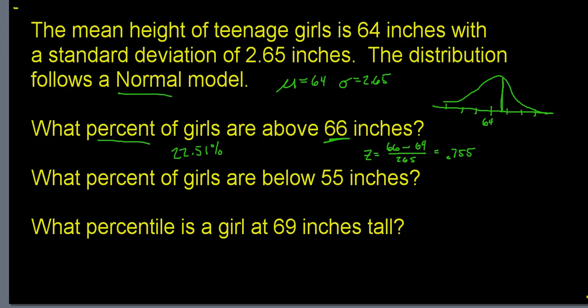What percent of girls are below 55 inches? I need to find where 55 inches falls on the model. Z-score: 55 minus 64 divided by 2.65 equals negative 3.396. If you understand the normal model, this is very unlikely — that's nearly negative 3.4 standard deviations below the mean, which is extremely rare.